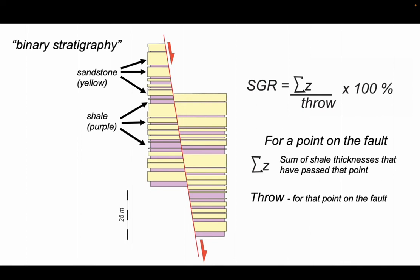For an individual point on the fault, the shale gouge ratio is equal to the sum of the shale thicknesses that have passed that point on the fault divided by the throw, then multiplied by 100 to get our expression into a percentage.